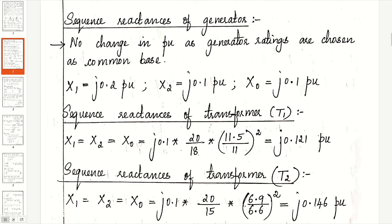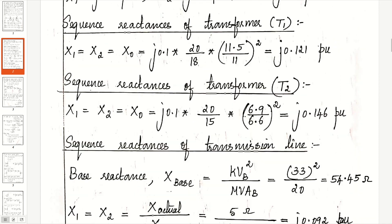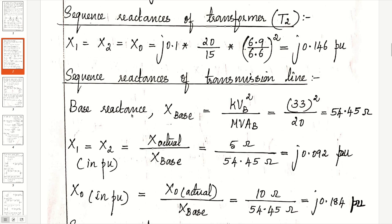For transformer T1, positive, negative and zero sequence reactances are the same, calculated as old value into (new MVAB / old MVAB) into (old KVB / new KVB) squared, with respect to the primary side. We get j0.121 per unit. For transformer T2, all three sequence reactances are the same and calculated as j0.146 per unit.